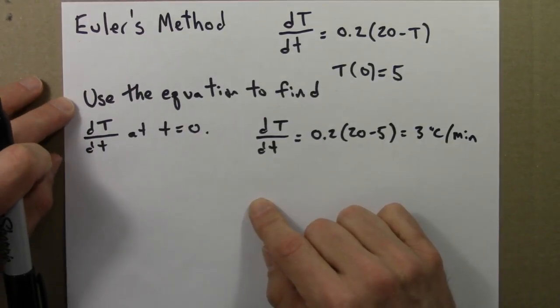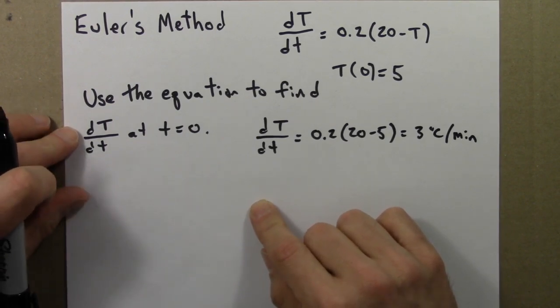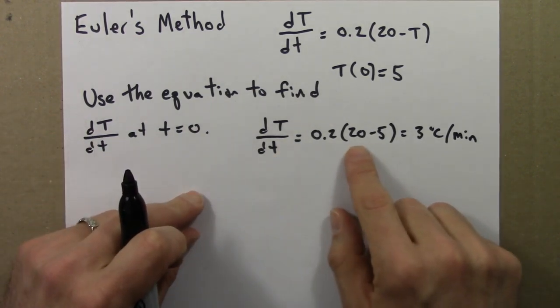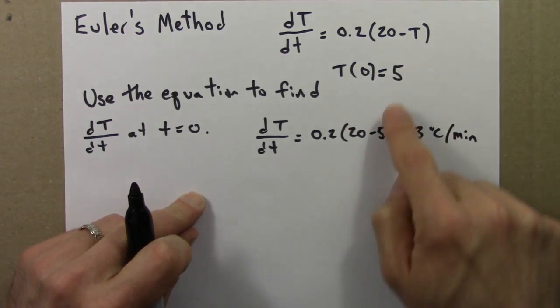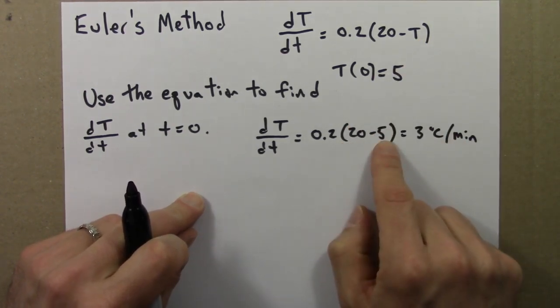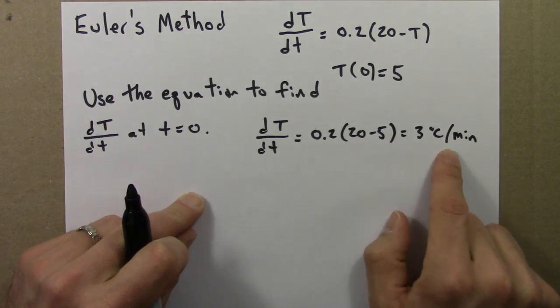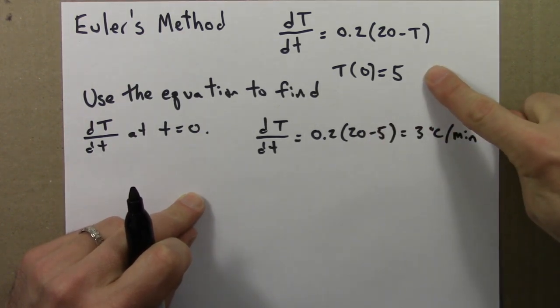I use the equation to find dT/dt, the rate of change of the temperature, at the initial time. So I just ask the equation by plugging in 5, so capital T is 5, 20 minus 5 is 15, times 0.2 gives me 3 degrees per minute. So this is how fast the object is initially warming up.